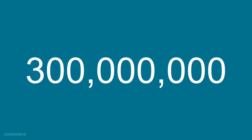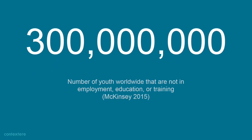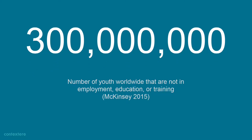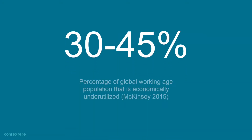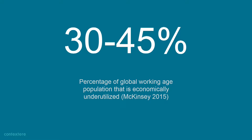Start with a big number: 300 million. That's currently the number of youth that are either underemployed, unemployed, or not in educational programs around the world — youth looking for opportunities, youth not having opportunities. Another big number is 45%. That's the number of working-age population that's economically utilized, again around the globe. Huge numbers of unproductive capacity that we need to tap into, that want to be productive but can't be for whatever societal and local regional reasons.